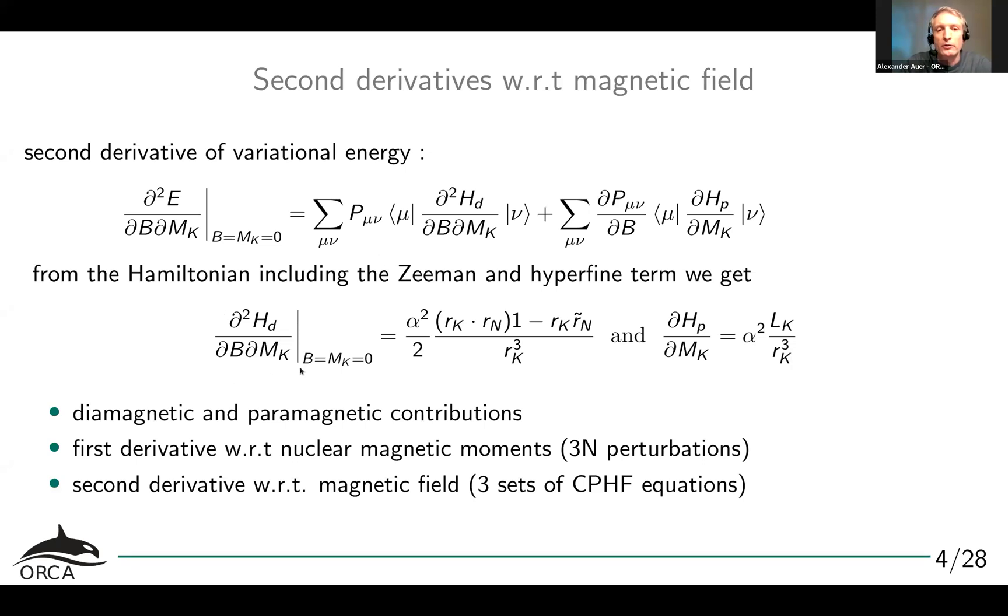If we formulate the Hamiltonian, you see that there are terms that occur which have high powers of 1 over r. So you have 1 over r cubed, and you have expressions that in some instances also carry the vector potential. So you have derivative with respect to the nuclear magnetic moments and with respect to the magnetic field. For every nucleus, you in principle have three perturbations. If you do the calculation, that actually means that calculating NMR chemical shifts for all nuclei in the molecule will roughly be as expensive as, for example, calculating a Hessian. So if you can do a frequency calculation, you will also be able to do NMR shielding calculations.